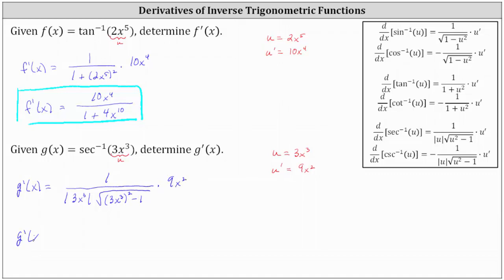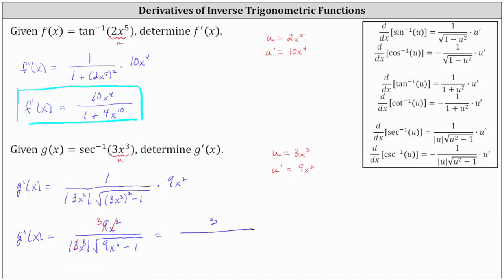Simplifying, we have g prime of x equal to 9x squared divided by the product of the absolute value of 3x cubed and the square root of the quantity 9x to the sixth minus one. Here we can simplify the 9x squared and the absolute value of 3x cubed, because the absolute value is attached to the square root by multiplication. There are three 3s in 9 and one 3 in 3, and then x squared over x cubed simplifies so that x squared becomes 1 and x cubed becomes x to the first. So the simplified form of g prime of x is 3 divided by the product of the absolute value of x and the square root of the quantity 9x to the sixth minus one.